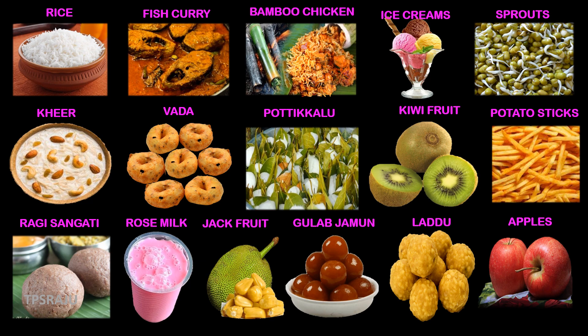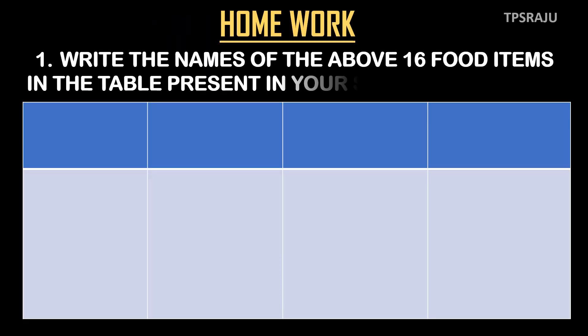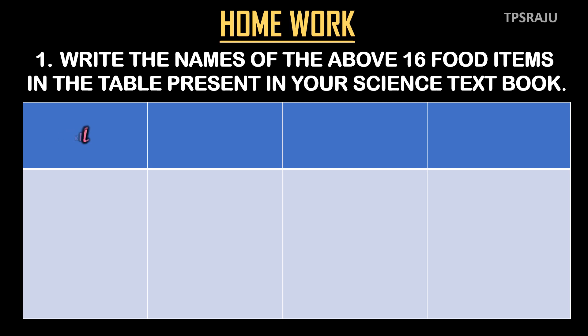Ok children, are you ready to do homework? First one is: write the names of the above 16 food items in the table present in your science textbook. What we are going to write in first column? I like to eat — that means, which food items do you like very much? Write their names in the first column. For example, I like gulab jamun, so I am writing gulab jamun in the first column.